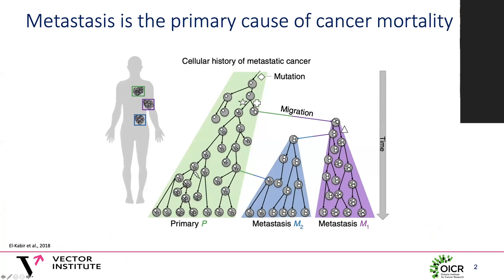Cancer develops as a process of somatic evolution, where cells acquire fitness advantages, often in the form of mutations that allow them to outcompete other cells. Over time, this process of genetic diversification and selection can lead to the development of cancer. One of the most important events in the evolution of a tumor is metastasis, where cells from a primary tumor gain the ability to migrate to and colonize a different organ within the body.